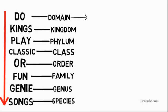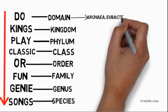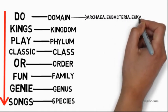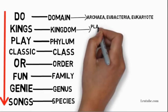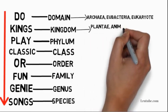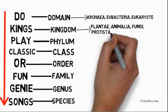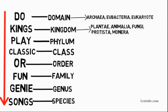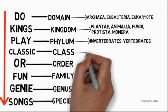In the domain, we have three basic domains: Archaea, Eubacteria, and Eukaryotes. In the kingdoms, we have five kingdoms: Plantae, Animalia, Fungi, Protista, and Monera. In the phylum, we have invertebrates and vertebrates.